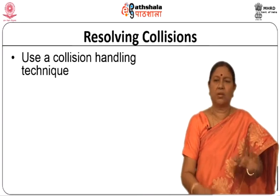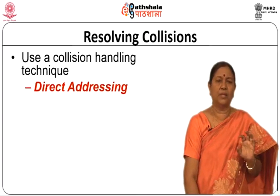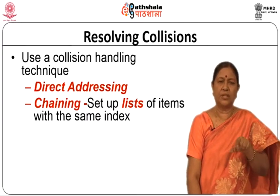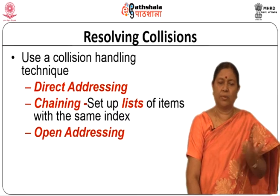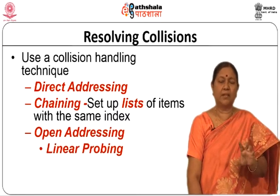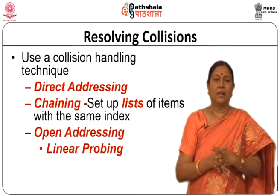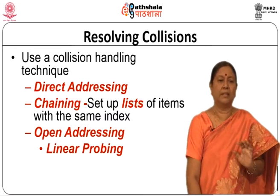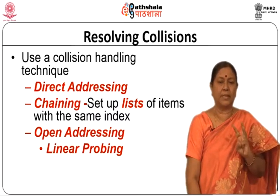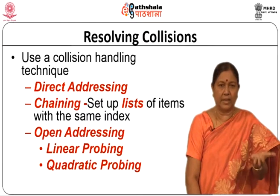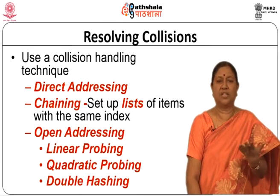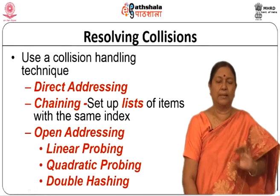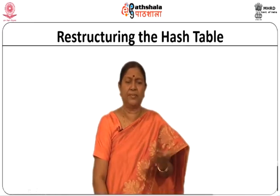Now we must use a collision handling technique. You can do direct addressing, you can do chaining — set up a list of items with the same index — or you can do open addressing. In open addressing, there are three methods within the table: linear probing, quadratic probing, and double hashing. We will be seeing all these techniques in detail in the next few slides.